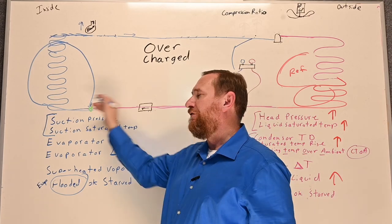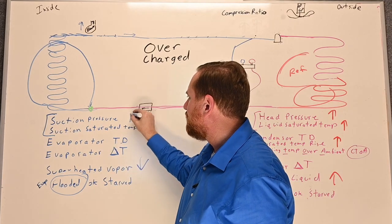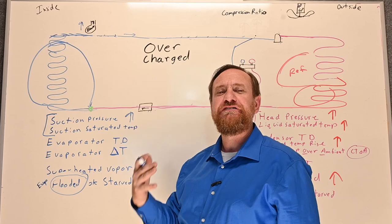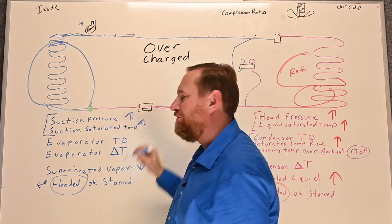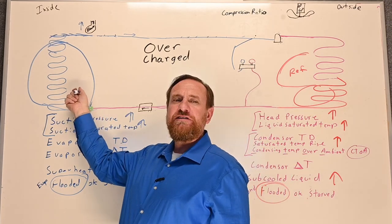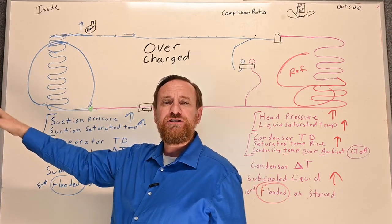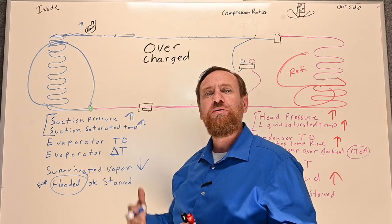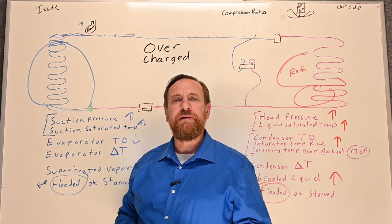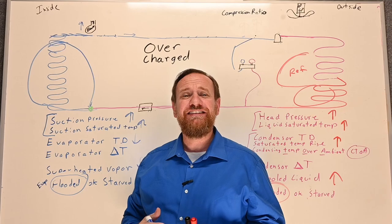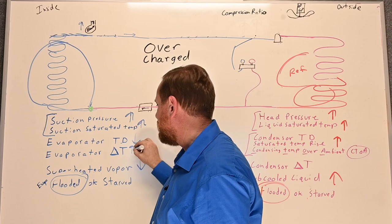On top of that, as I put more refrigerant in my evaporator coil, my suction pressure is also going to go up. And we know if our suction pressure goes up, our saturated temperature — the temperature of the refrigerant boiling — is tied to that, so our saturated temperature goes up as well. Now the air temperature is still the same, so the temperature difference between the refrigerant and the air is closer together, meaning our condenser TD may drop. Our evaporator delta T — air in versus air out — will typically get farther apart, so that number goes up.